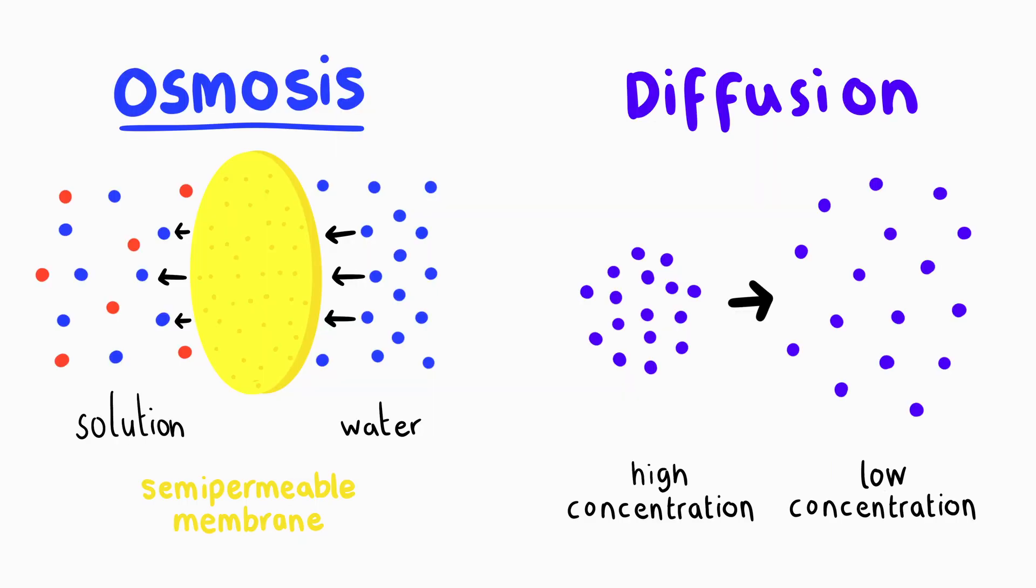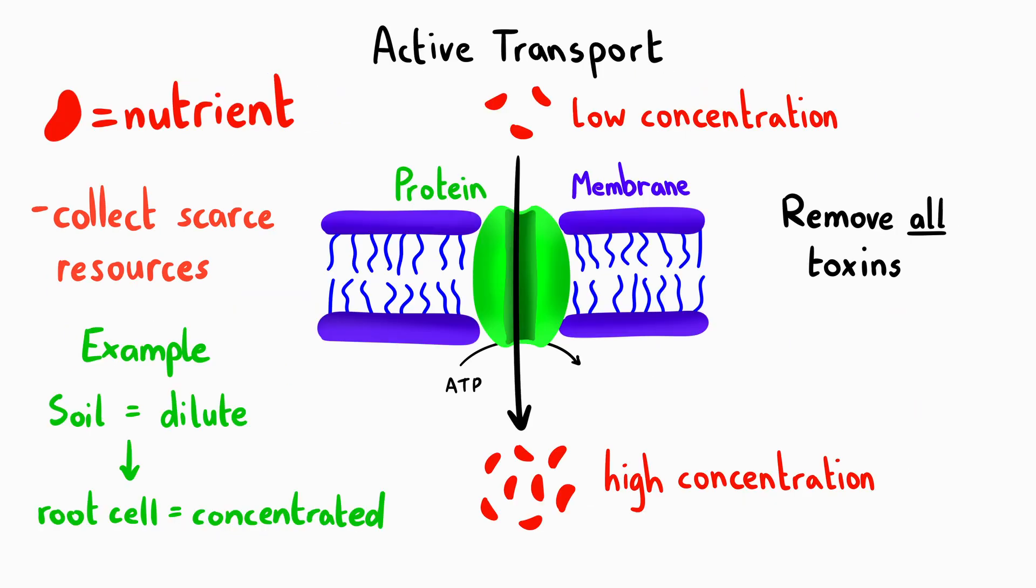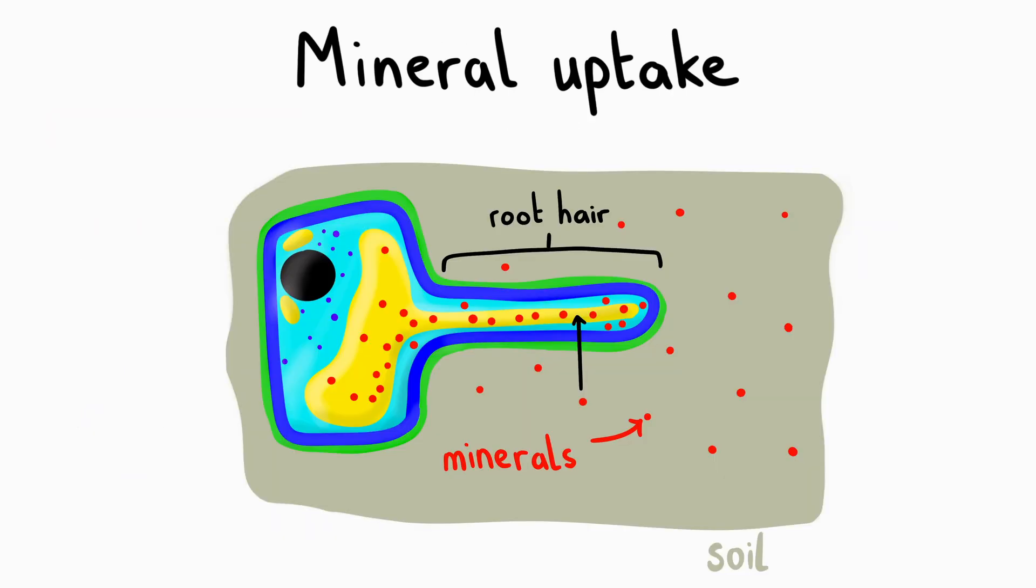In summary, passive processes like diffusion and osmosis allow cells to move substances along concentration gradients without using energy. Active transport enables cells to move substances against these gradients. Understanding these transport mechanisms helps us appreciate how cells and organisms maintain their internal environment and interact with their surroundings.